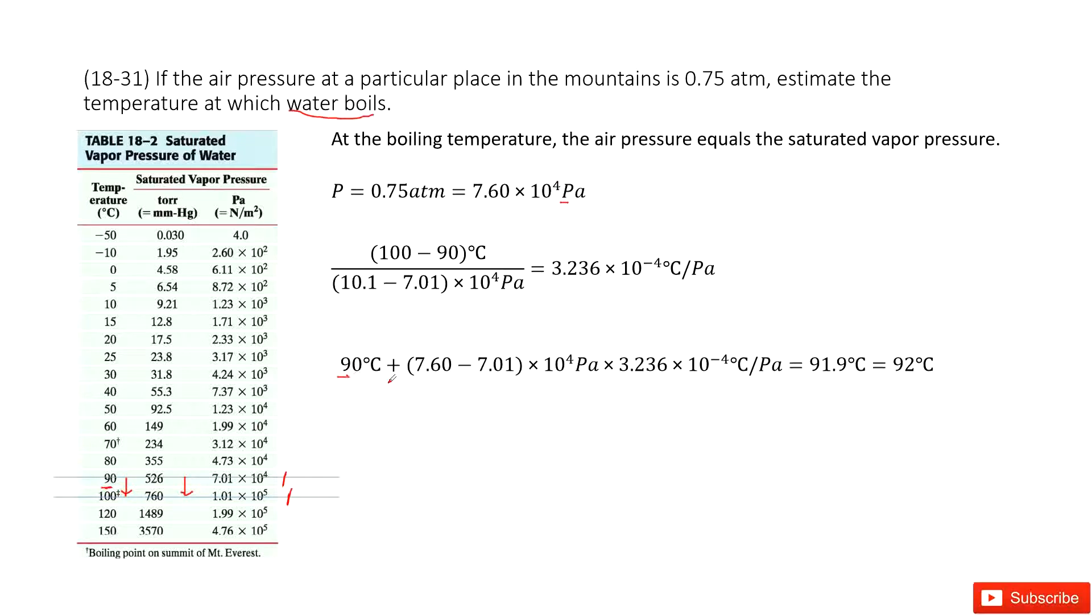90 centigrade times the slope, and times the difference between this we are interested, 7.6 minus this one.